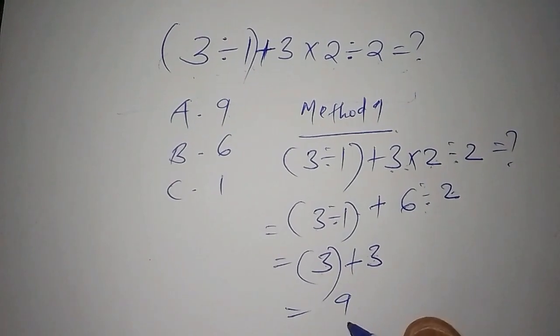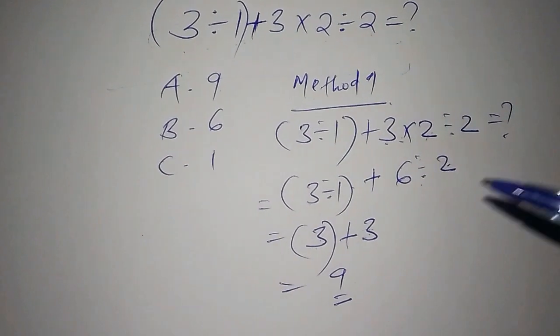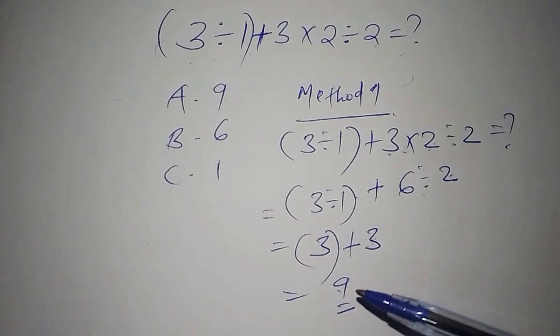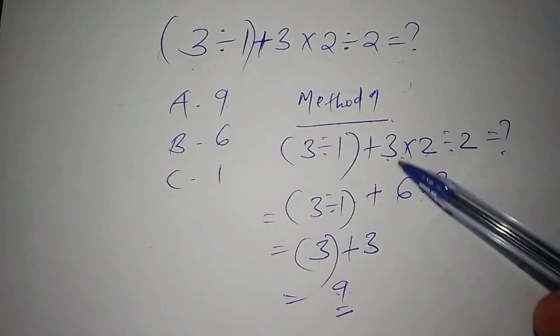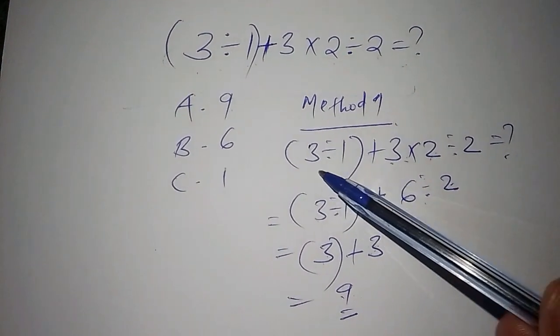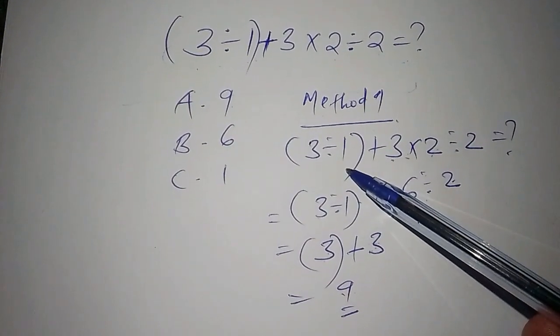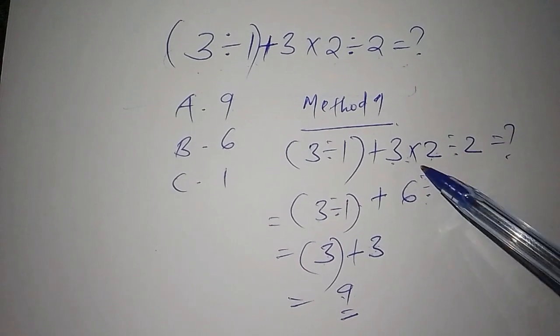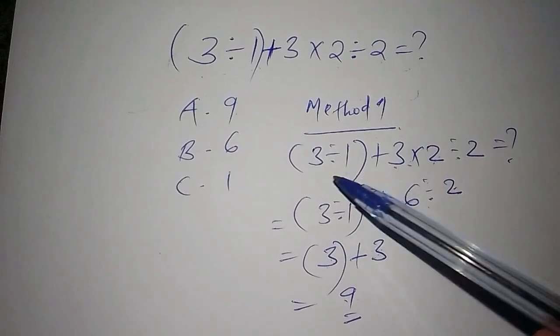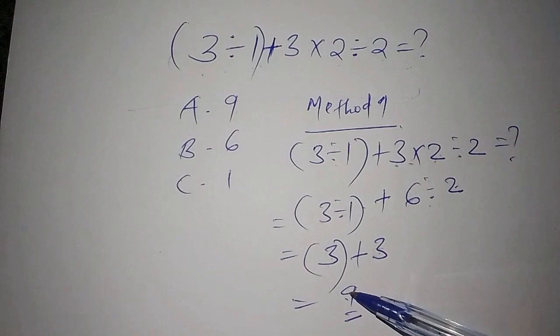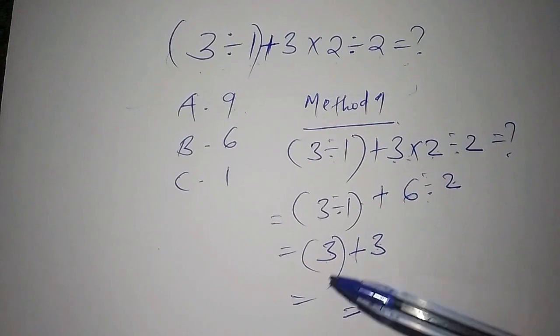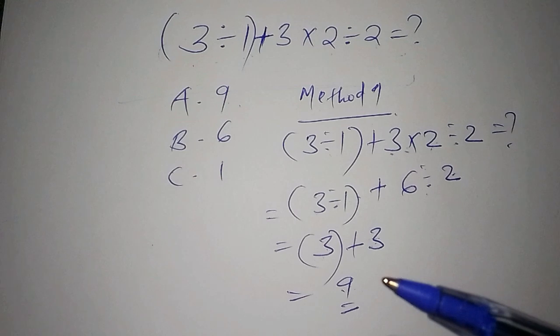If you can see this first method, there was an error committed somewhere. The first thing this person was supposed to do was work out the bracket first, but they went ahead and worked out the division first not considering the bracket, and got the answer as 9.